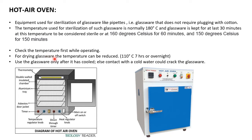The hot air oven is also used for drying glassware. For drying, the temperature used is 110 degrees Celsius, and you can keep the glassware for a minimum of seven hours or overnight. Use the glassware only after it has cooled; if it comes in contact with cold water while hot, it can crack.